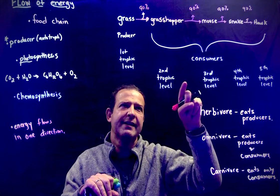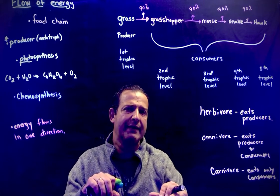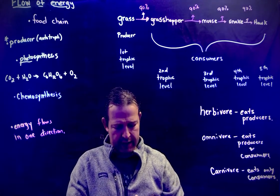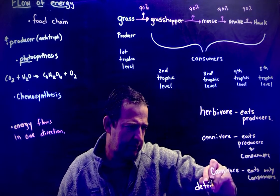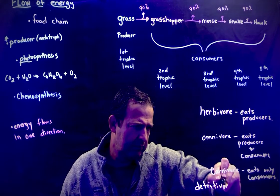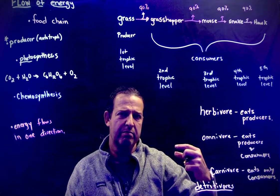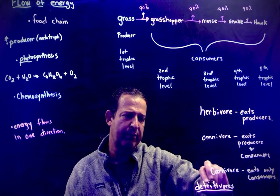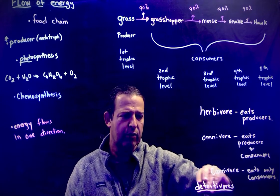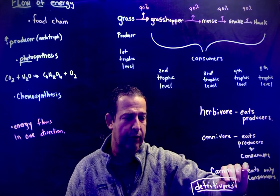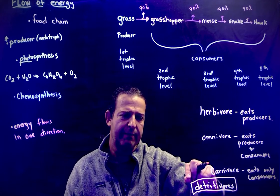One thing we left off is that we have things called decomposers and detritivores, which break down dead decaying matter. Detritivores break down dead decaying leaf litter and rotting material — organisms like crabs filter in and break down dead material. Earthworms are another example, breaking down matter as they crawl through the soil and digest that material.